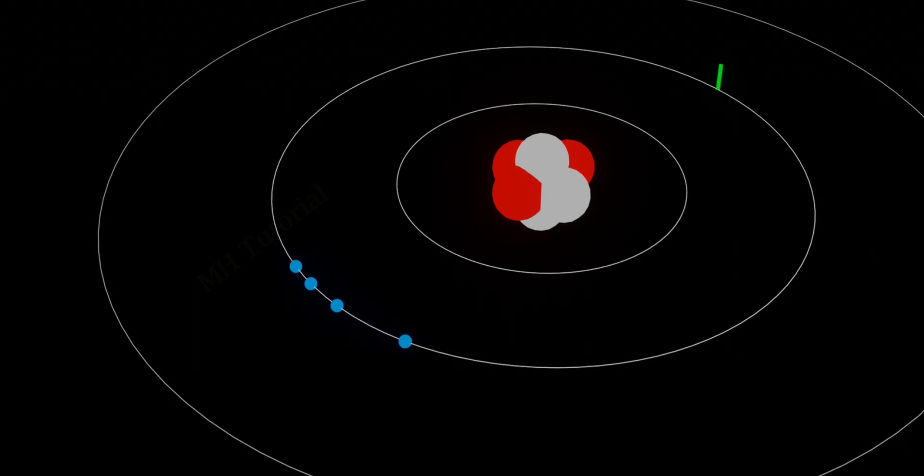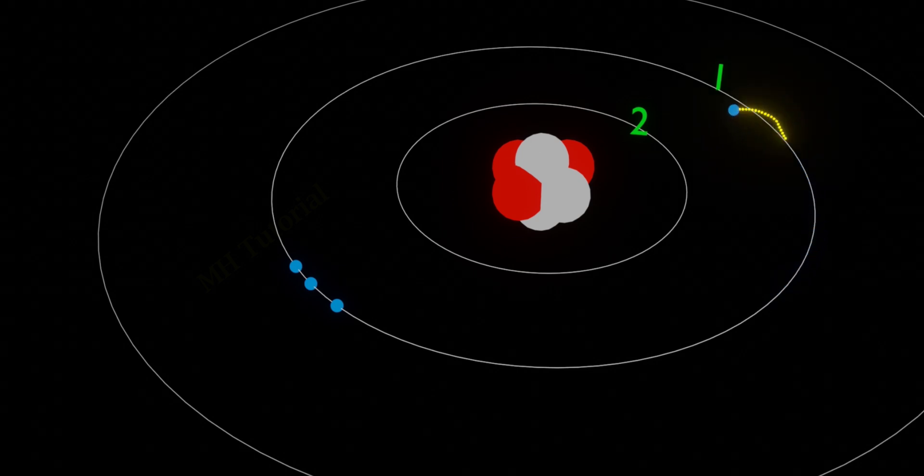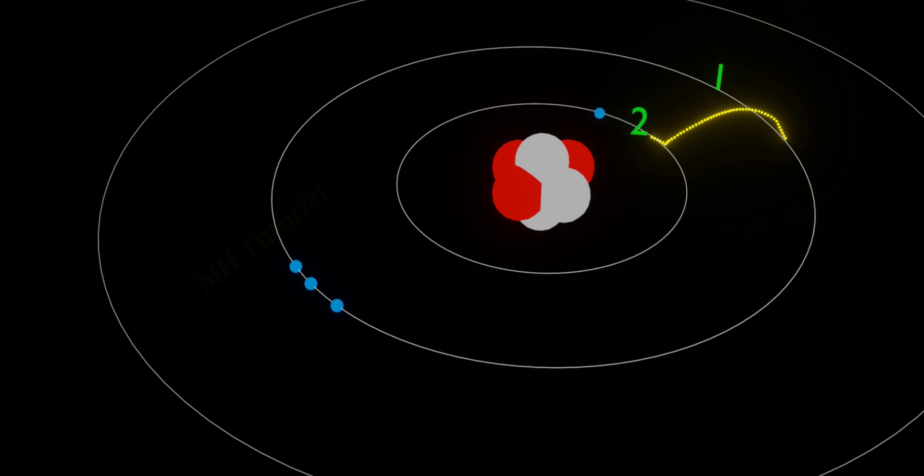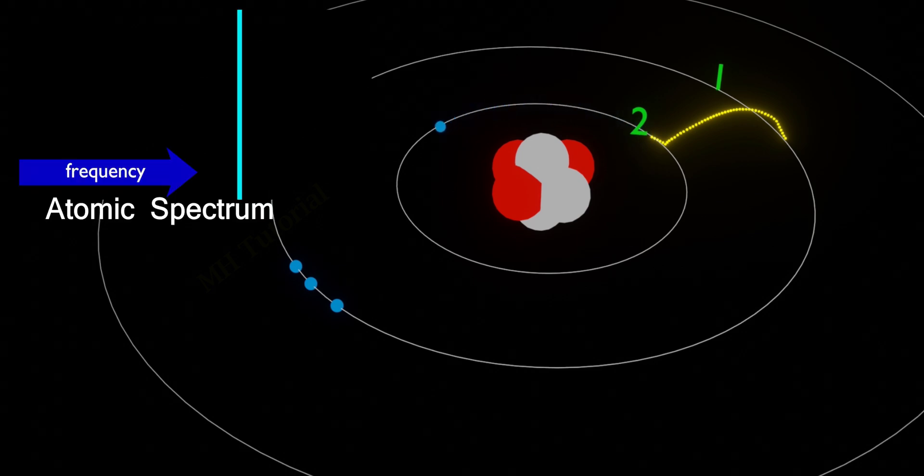Suppose there is no other orbit between orbit one and orbit two. An electron gets only one possible way to transit, which is orbit one to orbit two. In this case, only one transition occurred. Therefore, only one line spectrum is generated.